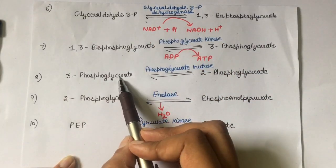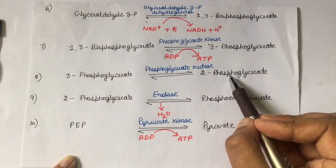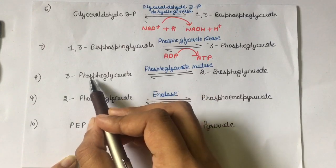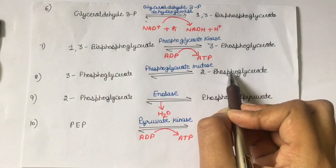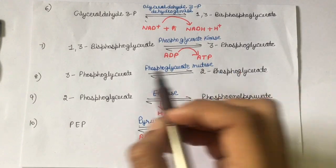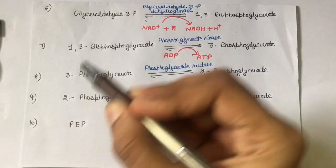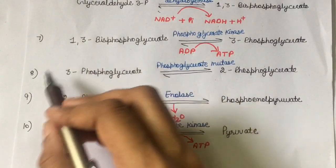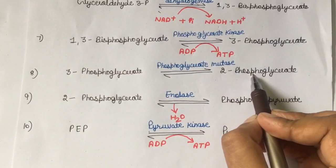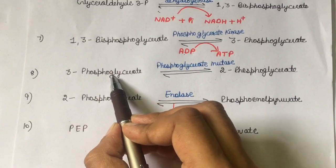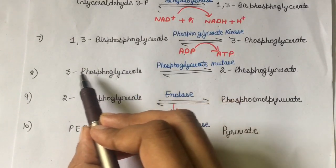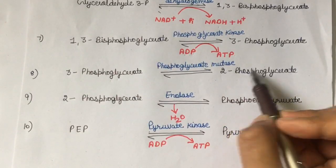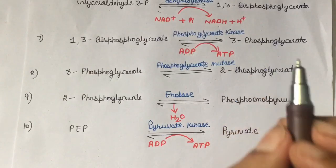In the next step, 3-phosphoglycerate gets converted into 2-phosphoglycerate. This is basically a rearrangement reaction — it involves the movement of the phosphate group to a different carbon atom within the same molecule. In 3-phosphoglycerate the phosphate is on the third carbon position, and in 2-phosphoglycerate it shifts to the second carbon position.